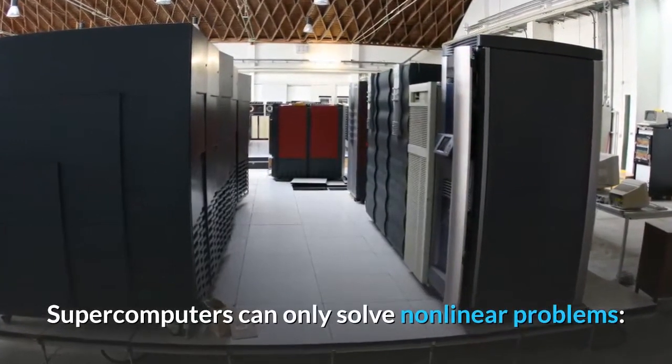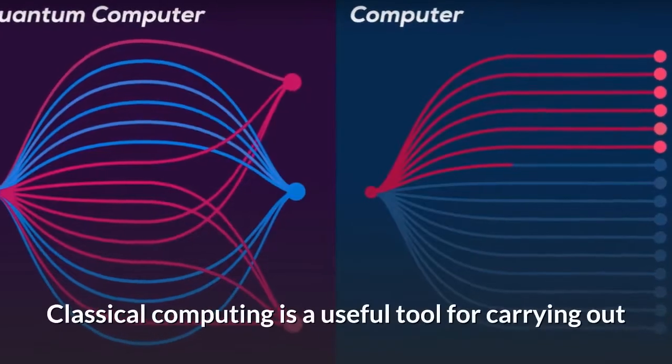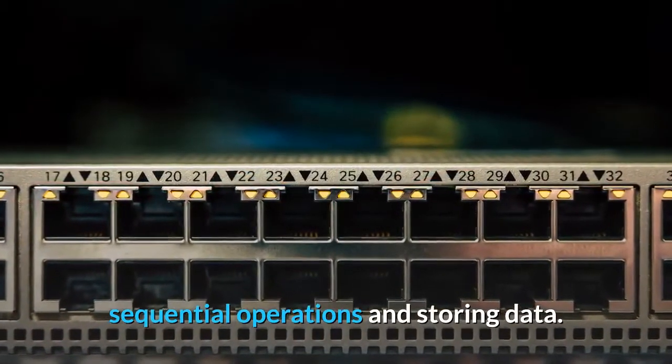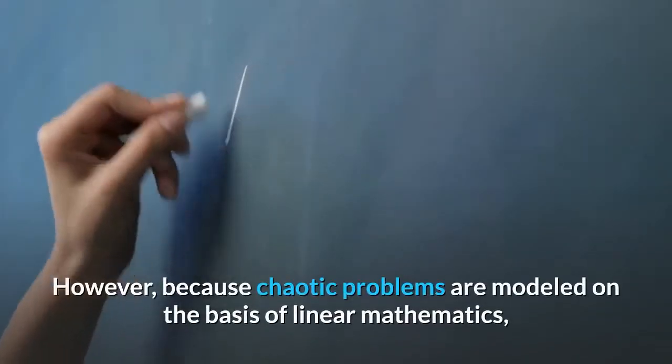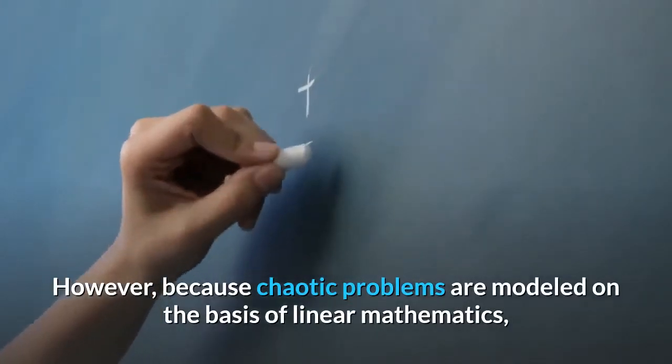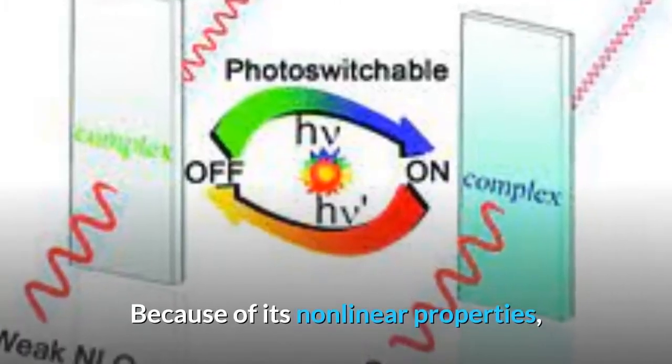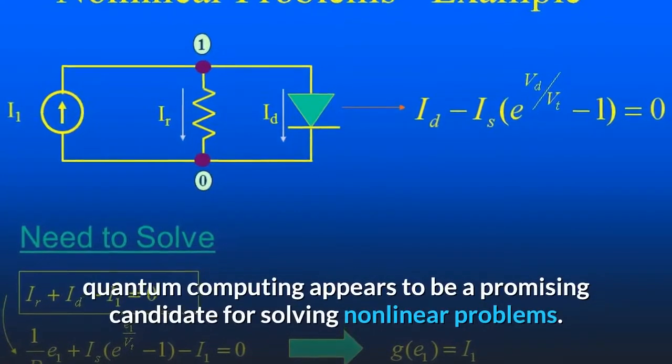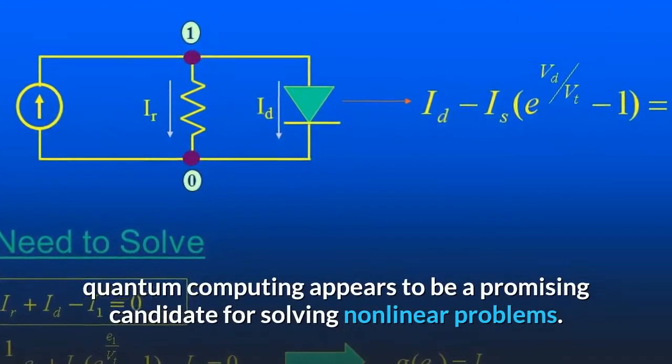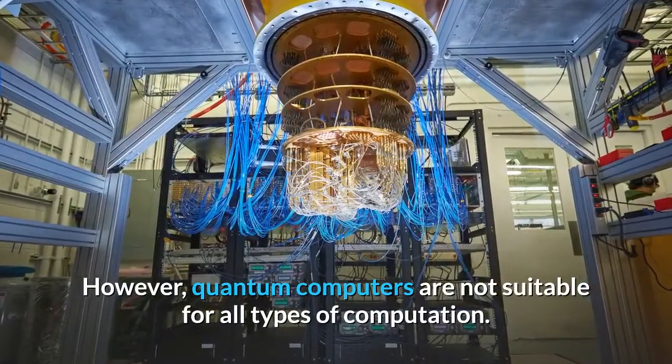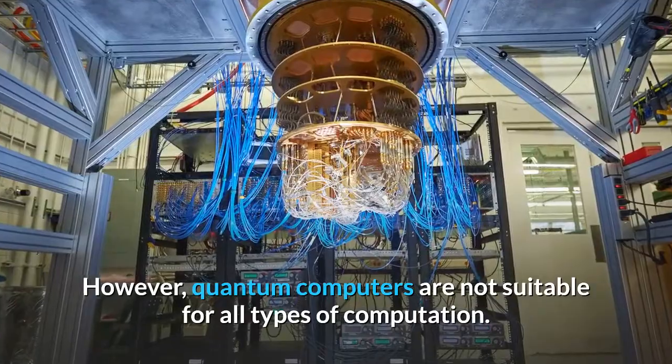Supercomputers can only solve nonlinear problems. Classical computing is a useful tool for carrying out sequential operations and storing data. However, because chaotic problems are modeled on the basis of linear mathematics, it is difficult to find solutions. Because of its nonlinear properties, quantum computing appears to be a promising candidate for solving nonlinear problems. However, quantum computers are not suitable for all types of computation.